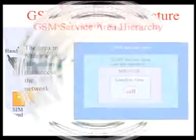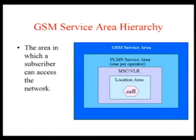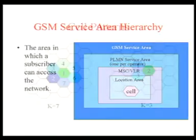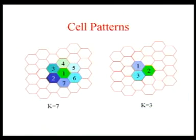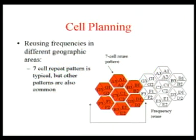This picture shows the GSM area hierarchy. The cell is the basic unit of the GSM system. A cell has one or several frequencies depending on the traffic load. Frequencies are reused but not used in neighboring cells due to interference.